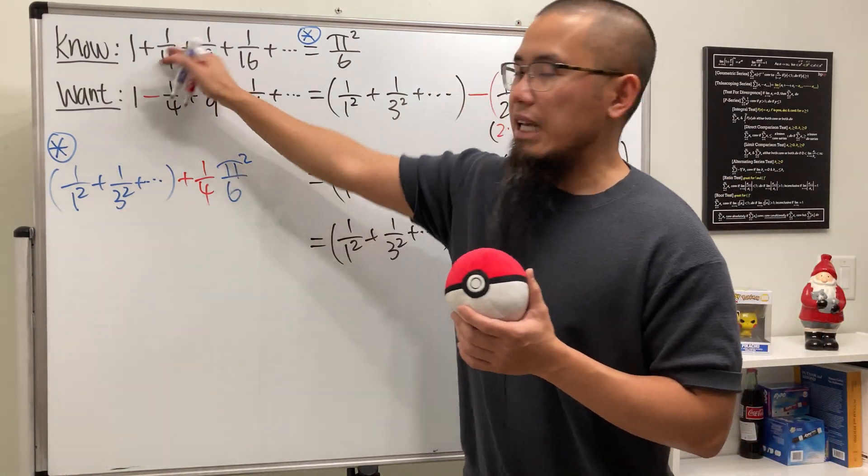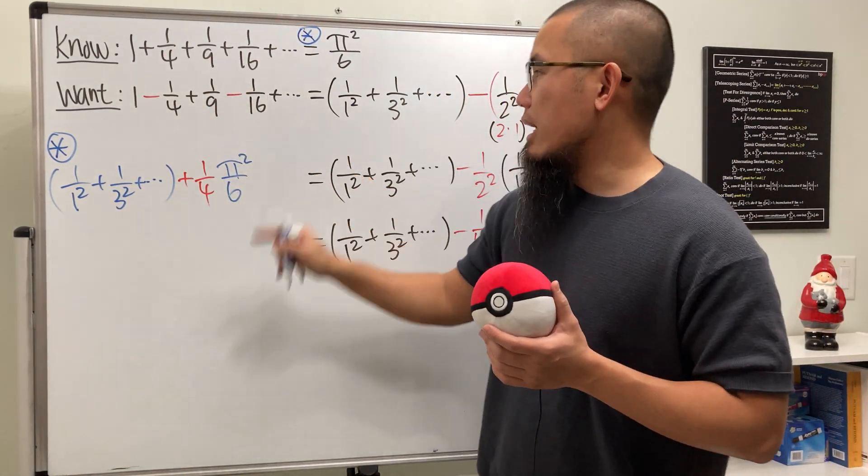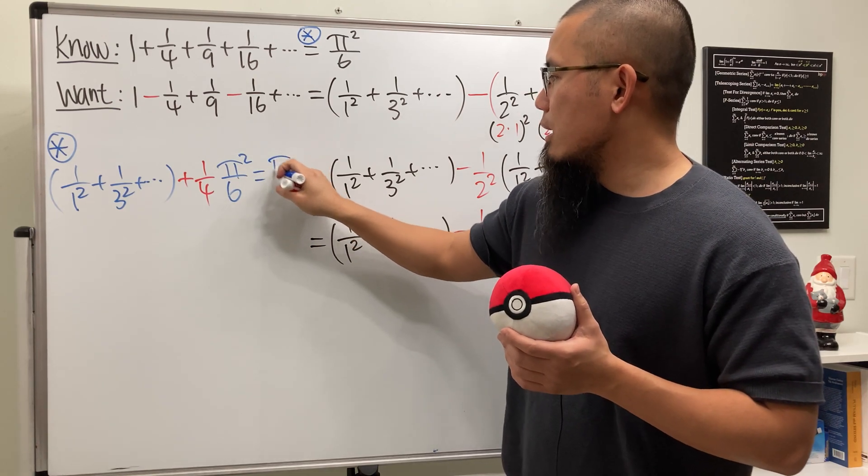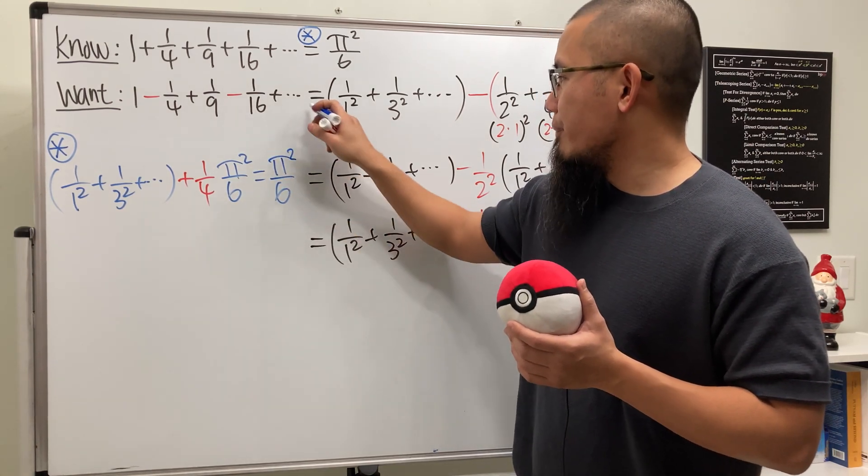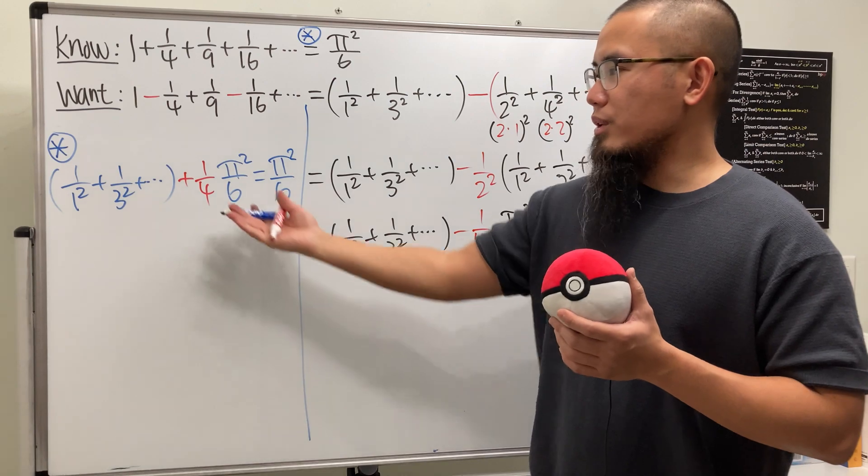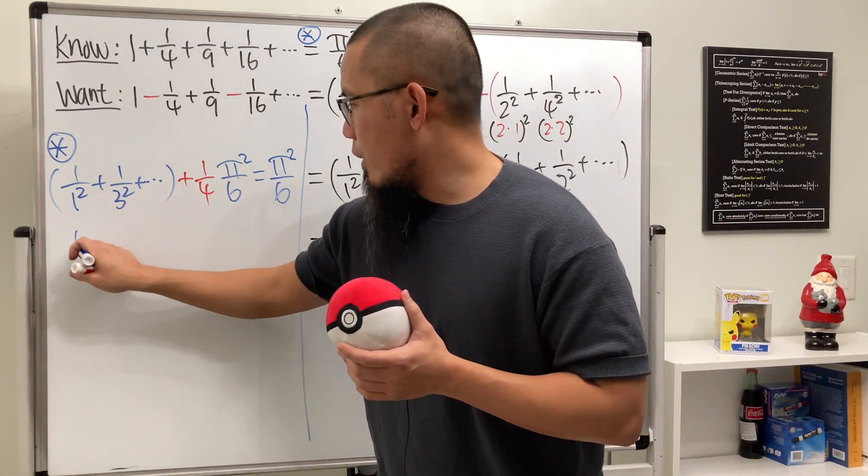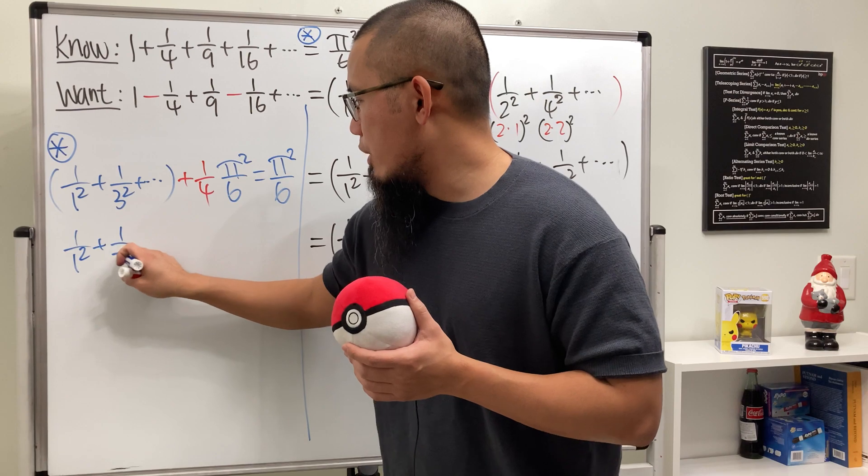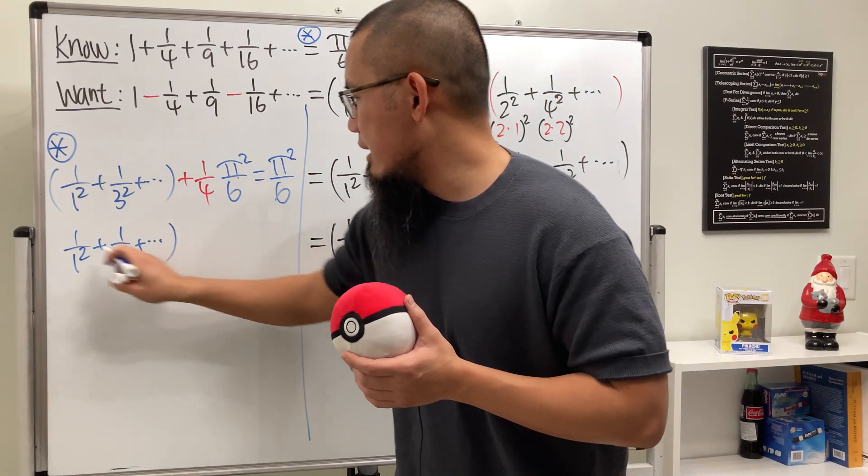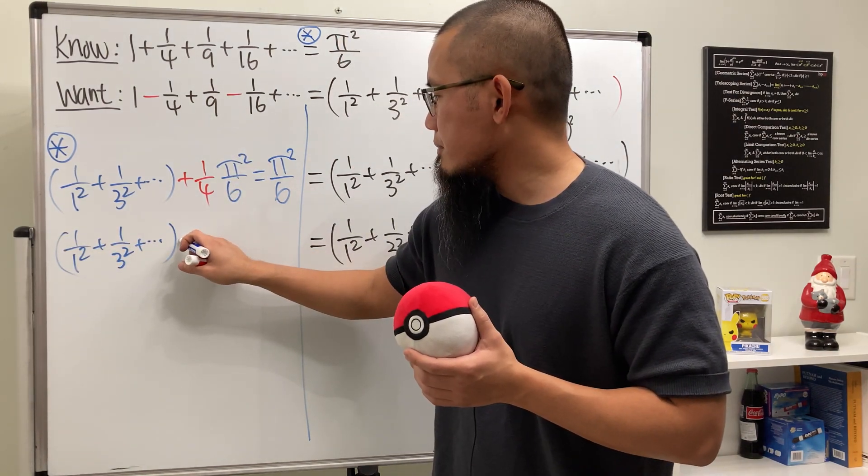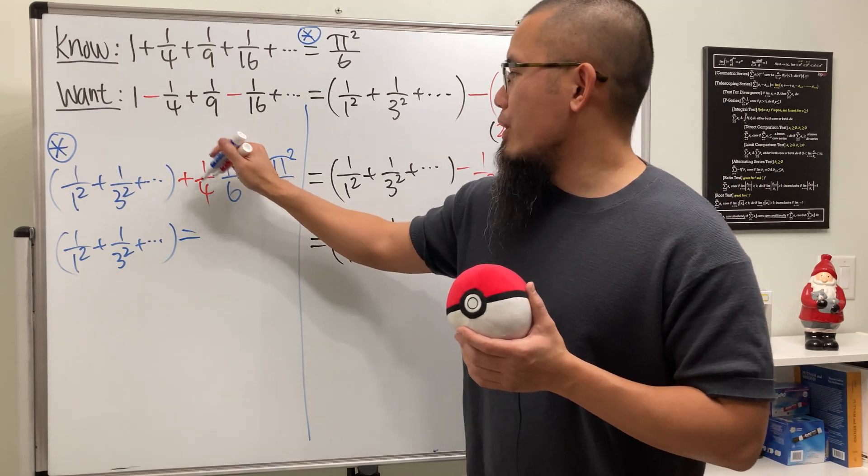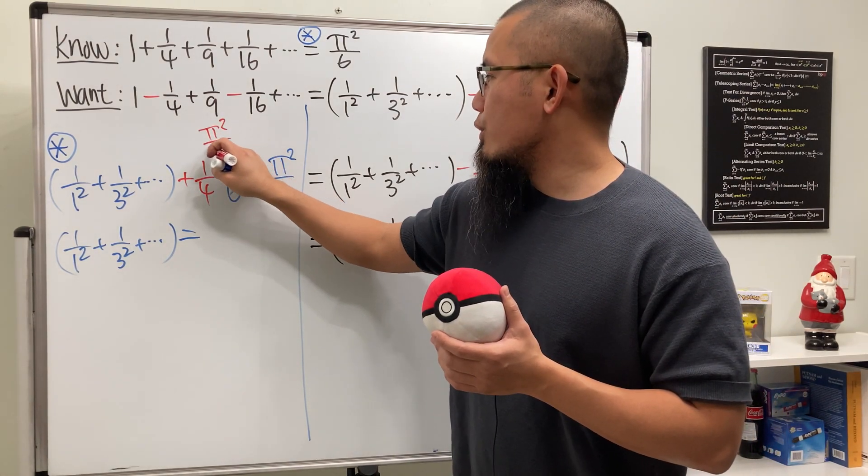So this is on the left-hand side, but the beauty of this one is that the right-hand side is pi squared over 6. So that's super cool, because we can solve for that. Okay, so this right here is just 1 over 1 squared plus 1 over 3 squared plus dot dot dot. And then this right here is of course pi squared over 24.